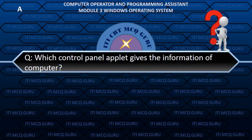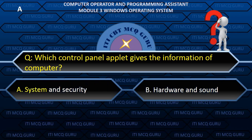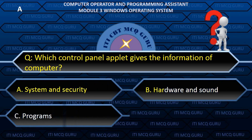Which Control Panel applet gives information about the computer? A. System and Security.